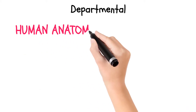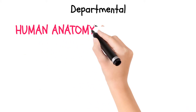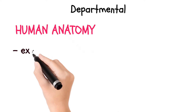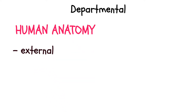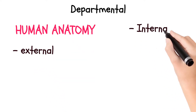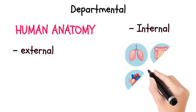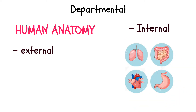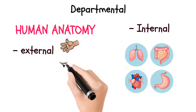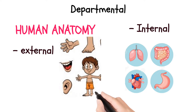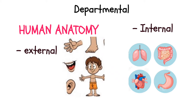The first departmental course is Human Anatomy. Human Anatomy is basically about the external and internal features of the human body. The internal features include the lungs, the intestines, the heart, the stomach, and a whole lot more. The external features include your hands, your mouth, your ears, your nose, your legs, and all of that.